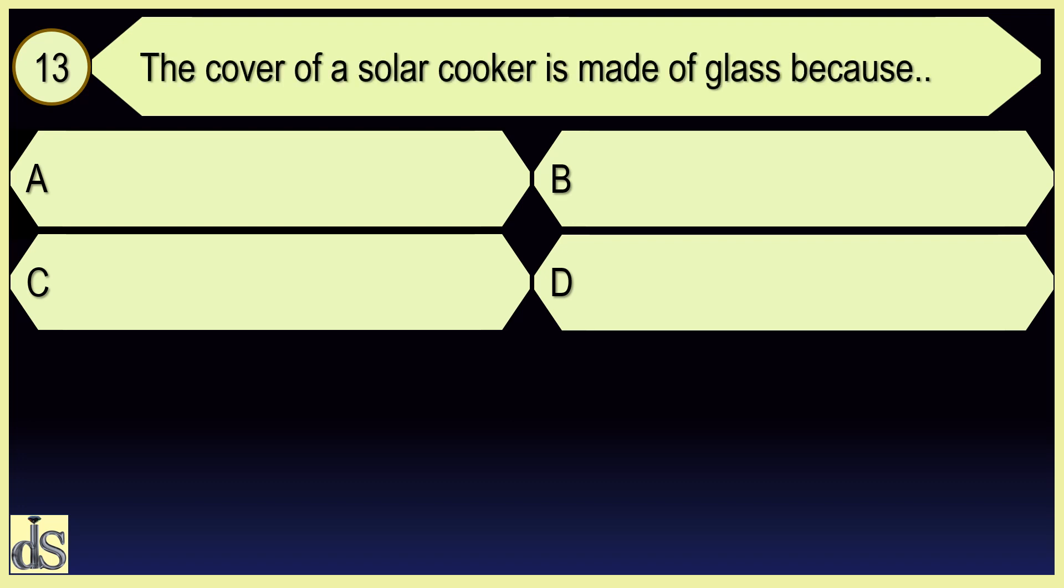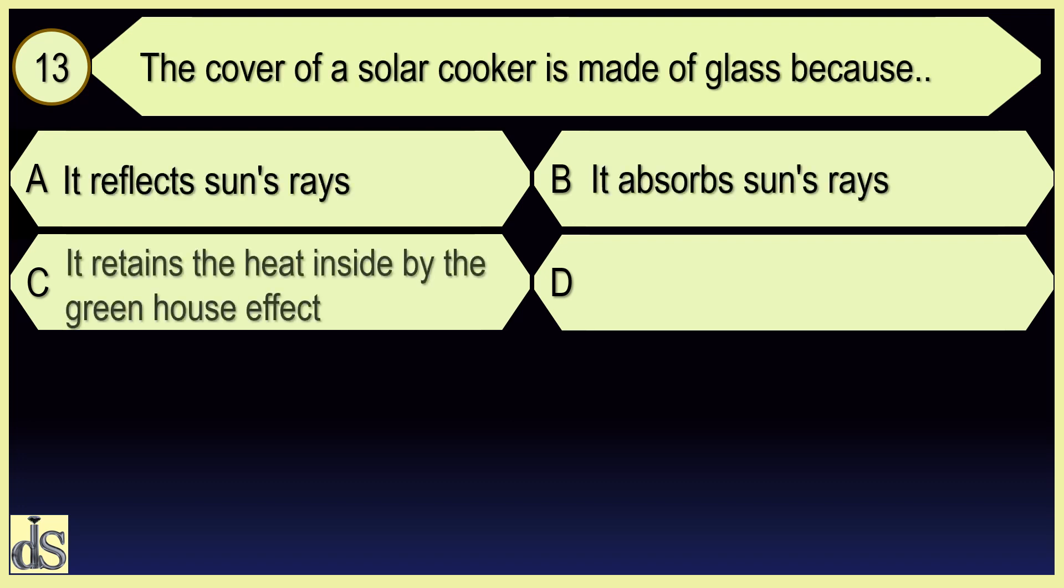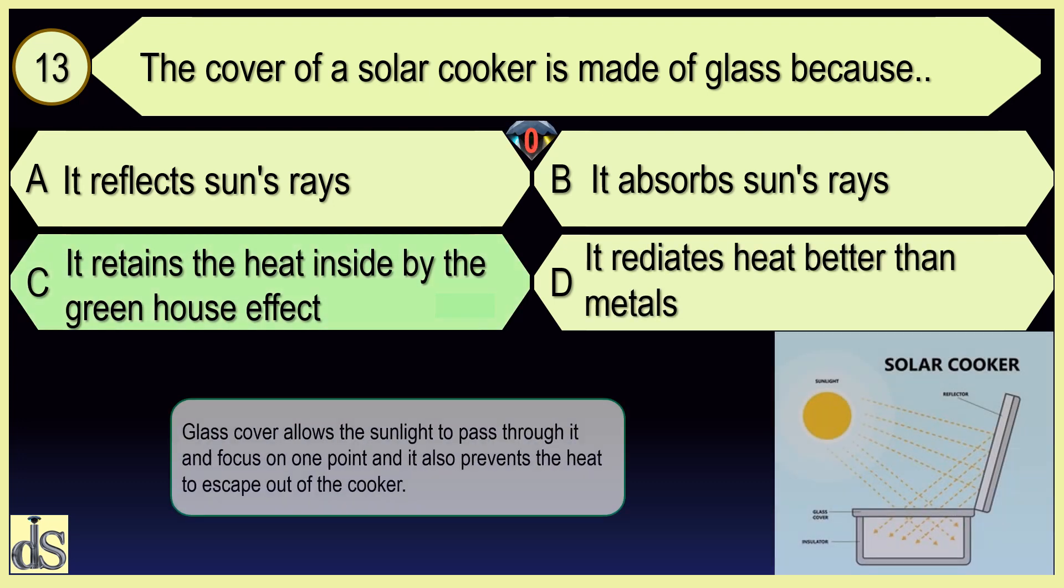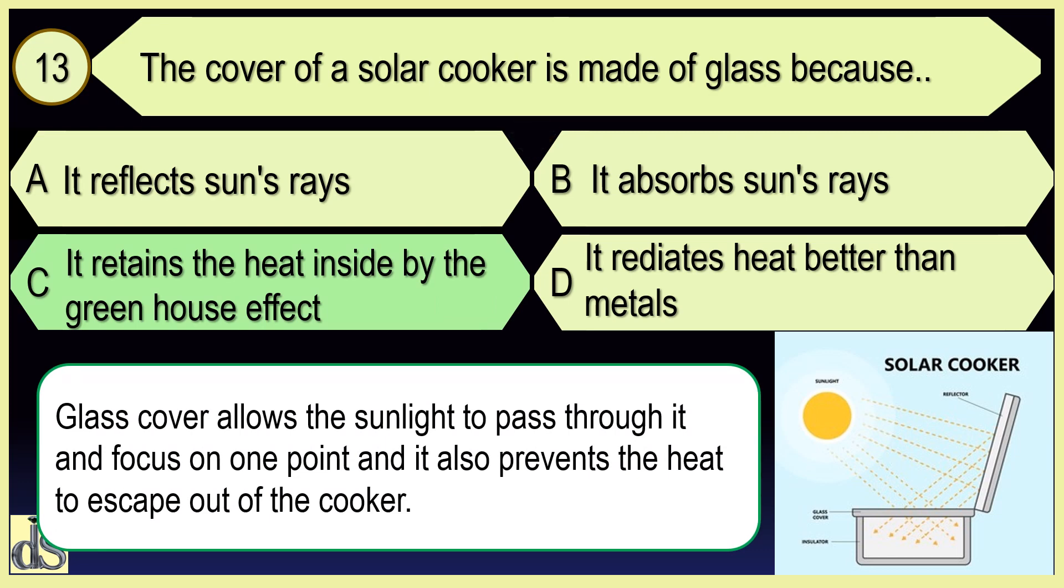The cover of a solar cooker is made of glass because it retains the heat inside by the greenhouse effect.